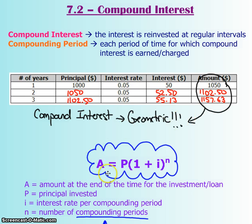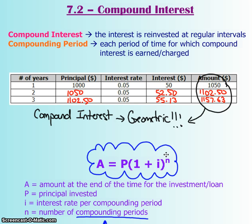The equation for compound interest is shown here, where A is your future amount — the amount at the end of the investment or loan period. P stands for your principal, your original amount borrowed or invested, which is the same as in simple interest. Your i and n are similar to r and t in simple interest, but both are affected by something called the compounding period — each period of time for which compound interest is earned or charged.